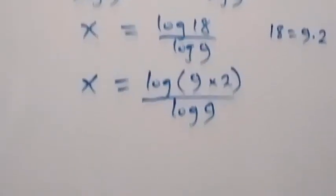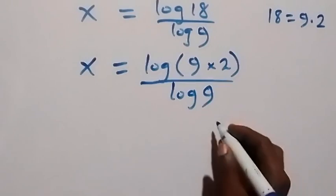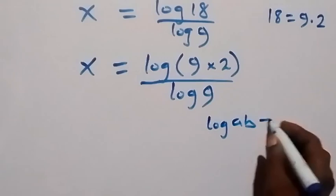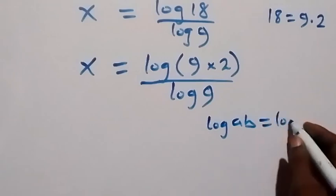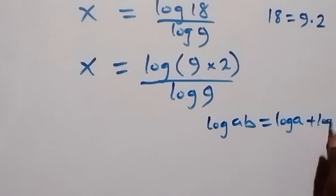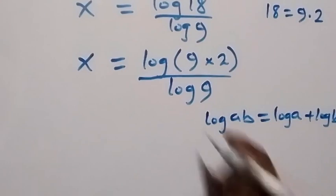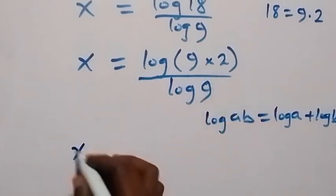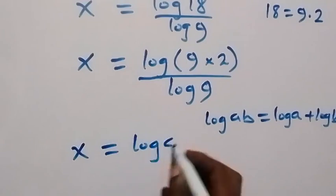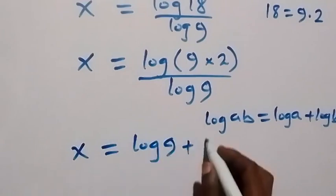Also applying the law of logarithms, when we have log of a times b, this can be separated as log a plus log b. Then this becomes x equals log 9 plus log 2,